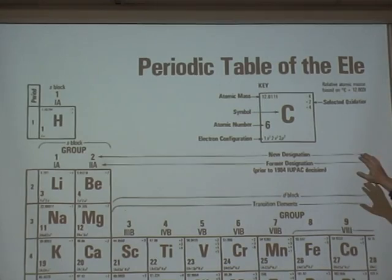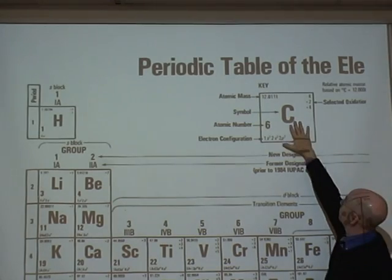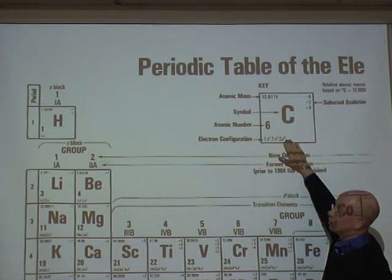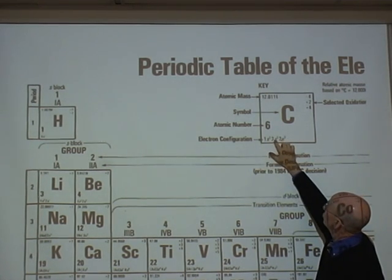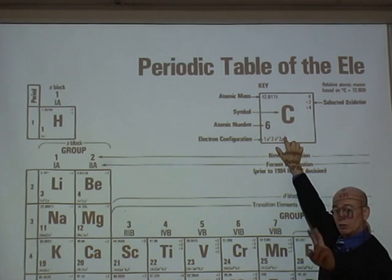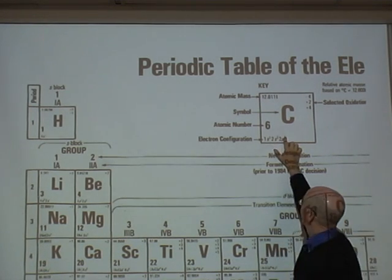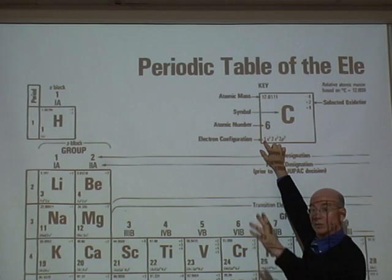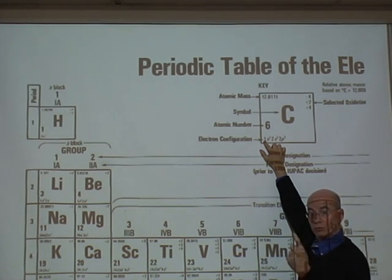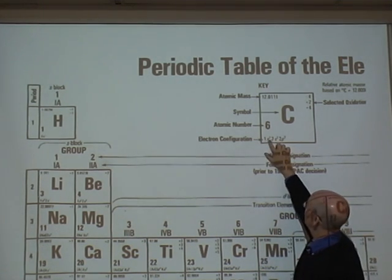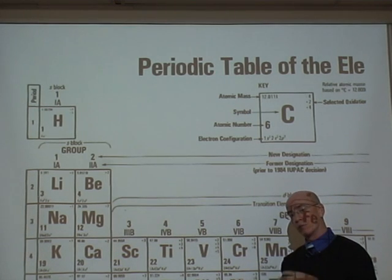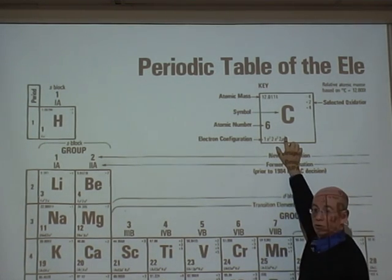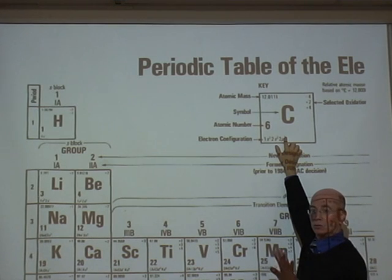If we look at this box right here, we'll see what's called an electron configuration: 1s1, 2s2, 2p2. This shows two of the four quantum numbers. The number here indicates N, the principal quantum number. The S and the P indicate the second quantum number, which we'll talk about. This is related to the third quantum number, but it doesn't really show what that is — we'll get to that.